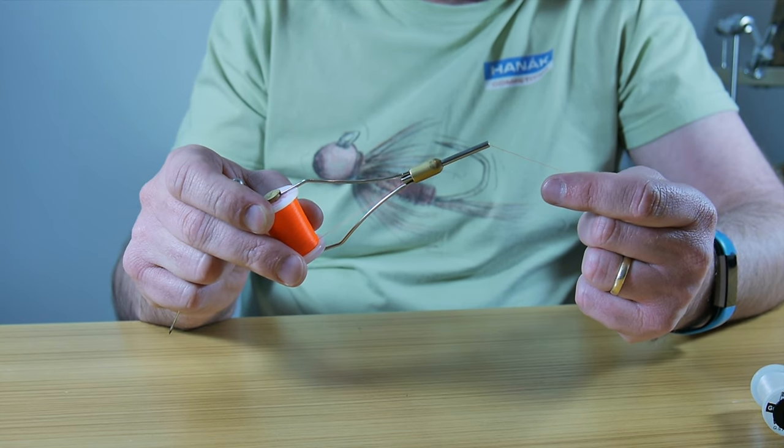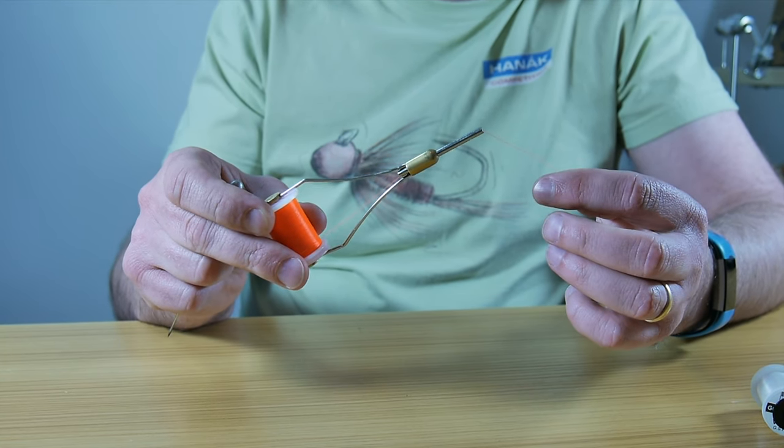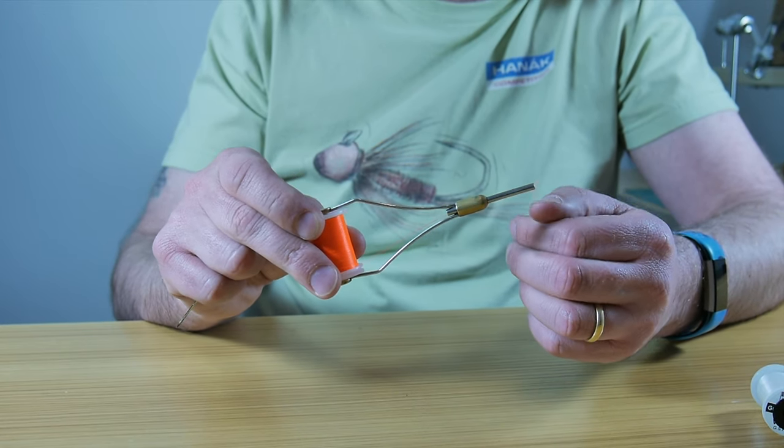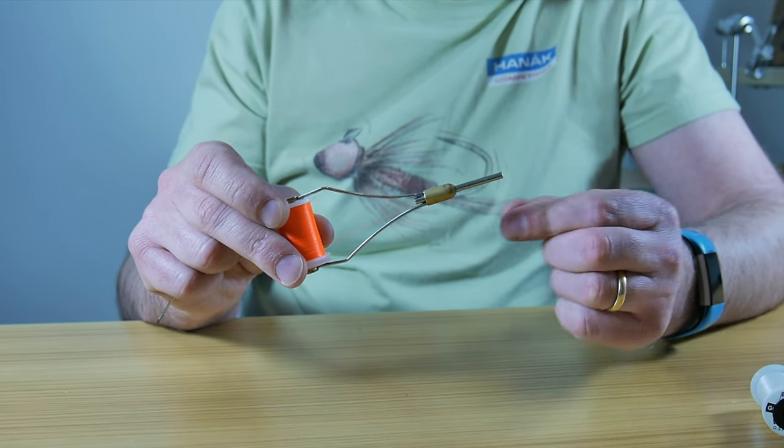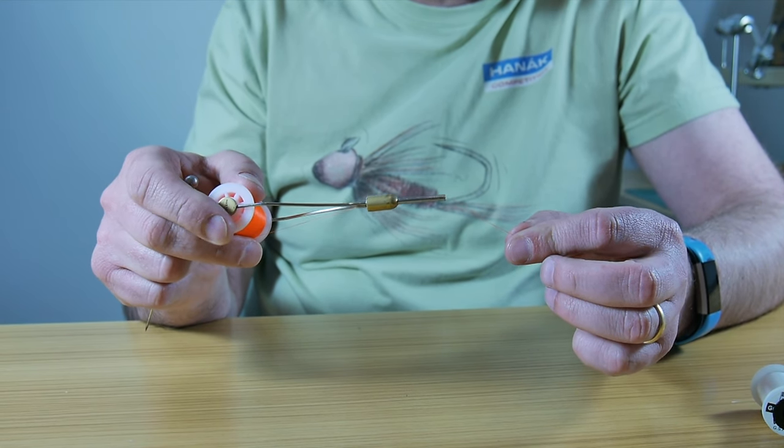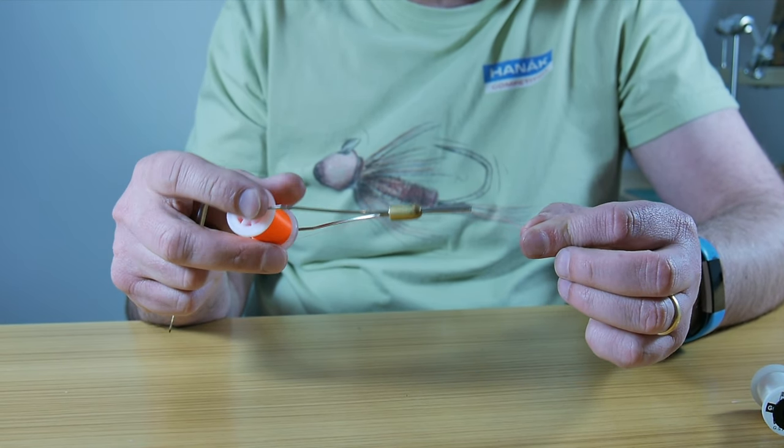When you're buying bobbins, please make sure you get them with a ceramic tube because often the metal ones get a little burr on them and after a while of tying, the thread just snaps and it becomes a really unpleasant experience.